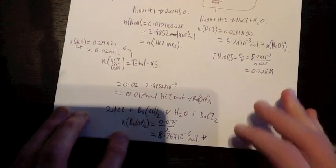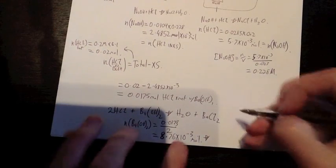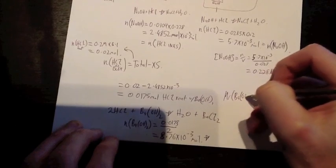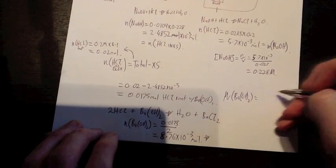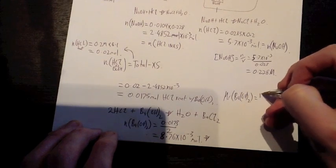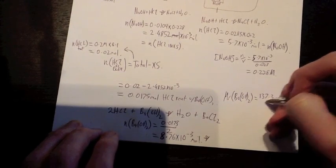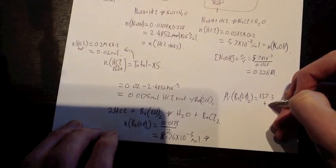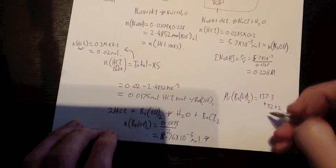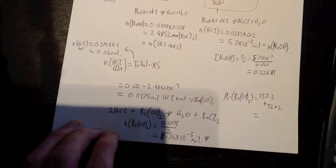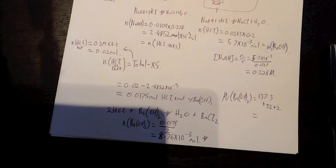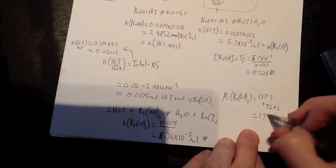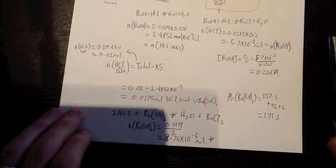We convert that into a mass. Now we look at our molar mass of Ba(OH)2 equals, the molar mass of barium is 137.3ish plus 32 for 2 oxygens plus 2 for 2 hydrogens. Now mass equals 137.3 plus 32 plus 2 equals 171.3.